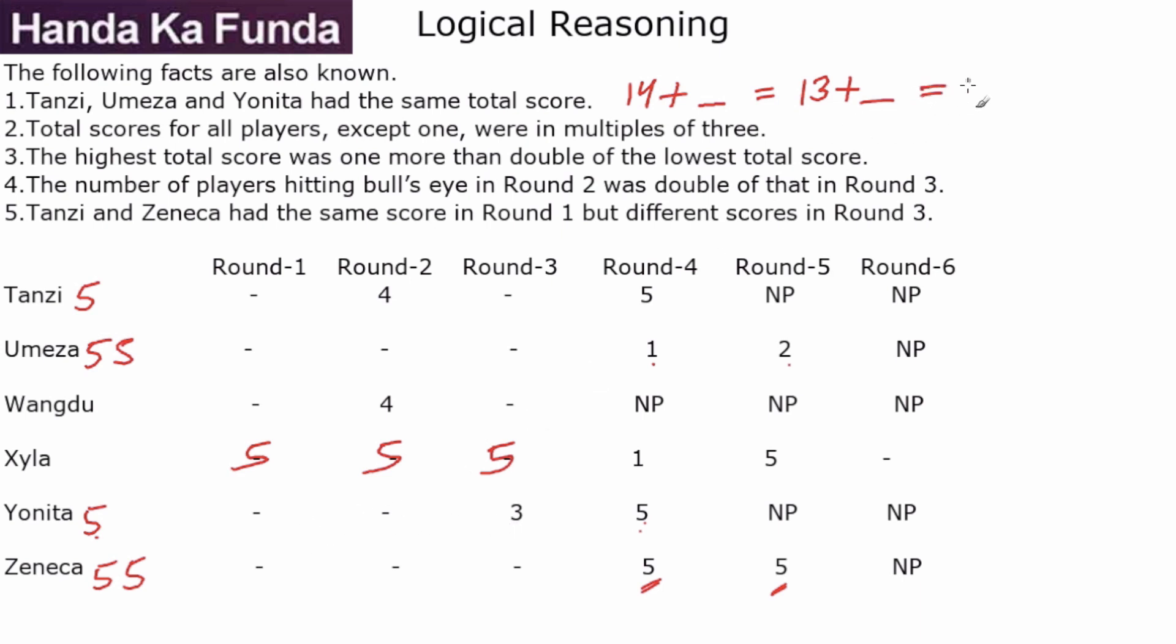So Yonita is also 13 plus something and then something is missing. Total score for all players except one were in multiples of 3. So except one player, all of them were in multiples of 3, which means that T, U, and Y, the three of them which have equal scores, they must be a multiple of 3. More than 14, more than 13, a multiple of 3. It could be 15, it could be 18.